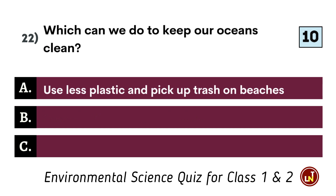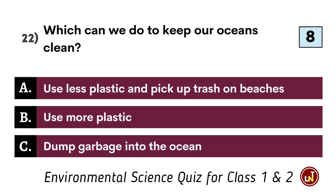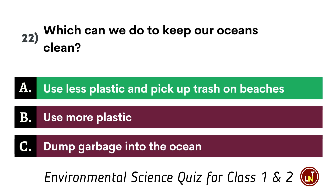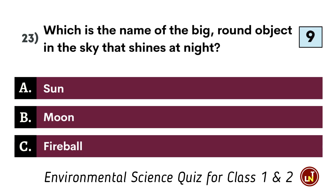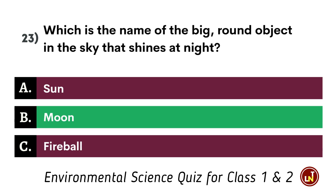Which can we do to keep our oceans clean? Use less plastic and pick up trash on beaches. Which is the name of the big round object in the sky that shines at night? Moon.